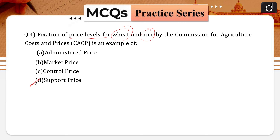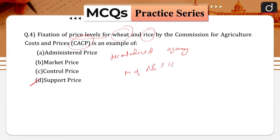The Commission for Agricultural Cost and Prices, i.e., CACP, is a decentralized agency under the Ministry of Agriculture and Farmers Welfare. Fixation of price levels for wheat and rice by the CACP is an example of support pricing.